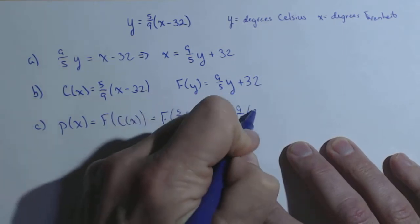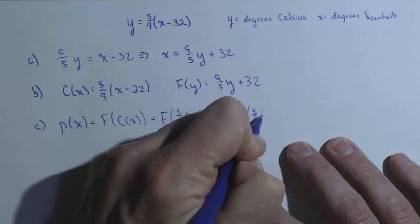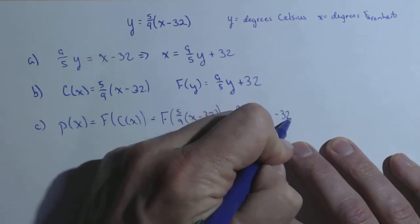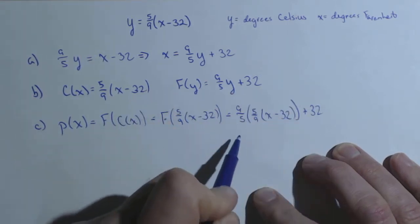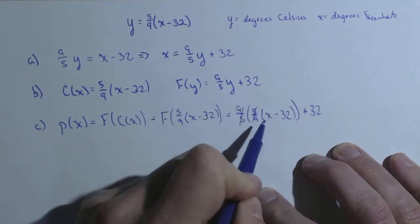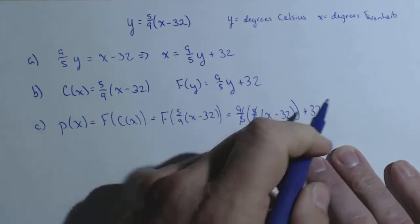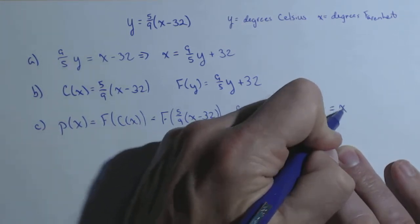So we have 9 fifths times 5 ninths times x minus 32 plus 32. What happens is the 9 fifths and the 5 ninths cancel, x minus 32 plus 32 just leaves us with x.